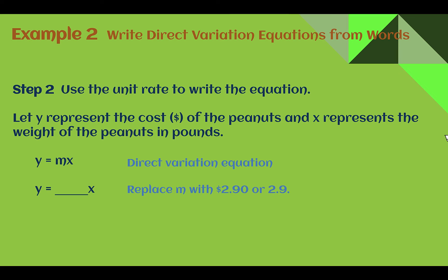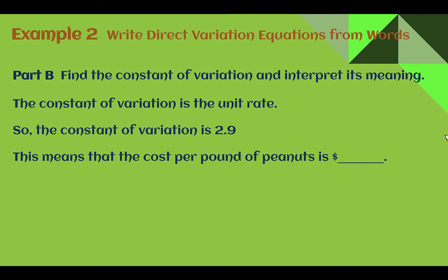Now that we know our unit rate, that's our constant of variation, so we can plug it in for m into our equation. We have y equals 2.9, or you could put 2.90 if you want to keep it consistent with the money aspect x, so y equals 2.9x. That is your direct variation equation. Last, what was our constant of variation? We just found it, that was 2.9, or $2.90. That means that the cost per pound was $2.90.